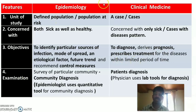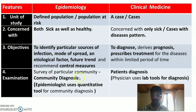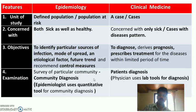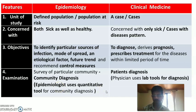The fourth difference is examination. In epidemiology, examination of a problem is done by conducting a survey of a particular community — a process called community diagnosis, which involves mass diagnosis, screening, or case finding. The epidemiologist uses quantitative tools for community diagnosis.